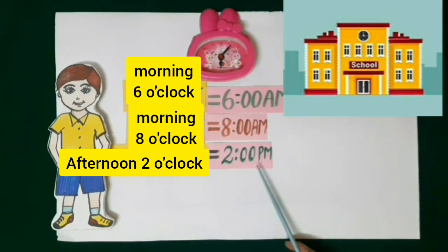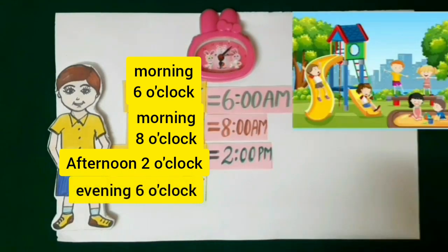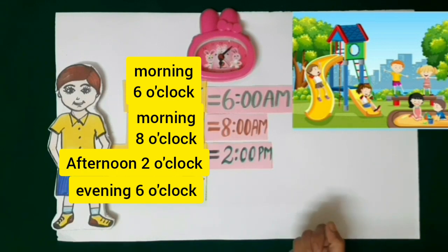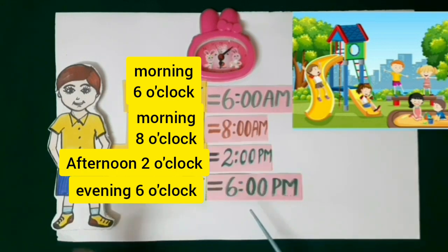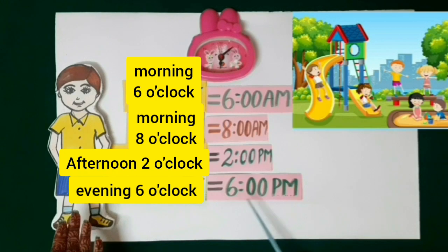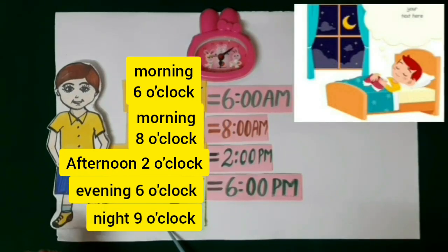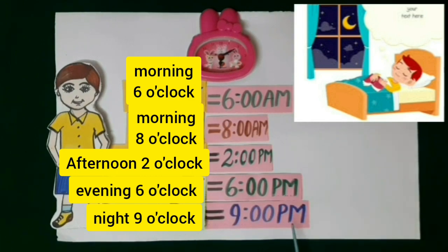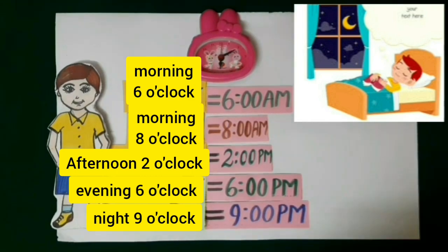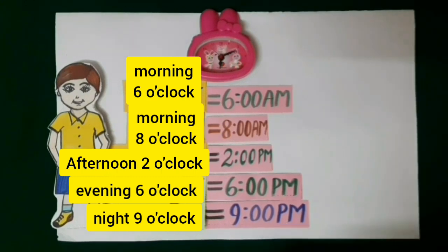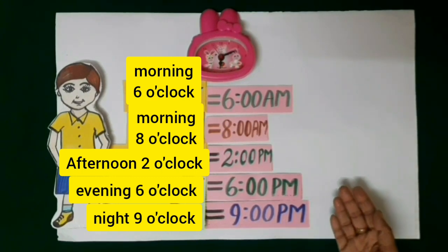He plays at 6 o'clock in the evening, and evening time is also shown with p.m., so time to play is 6 p.m. Anshul goes to bed at 9 o'clock in the night. P.m. is used for the time at night, so 9 o'clock at night is written as 9 p.m.